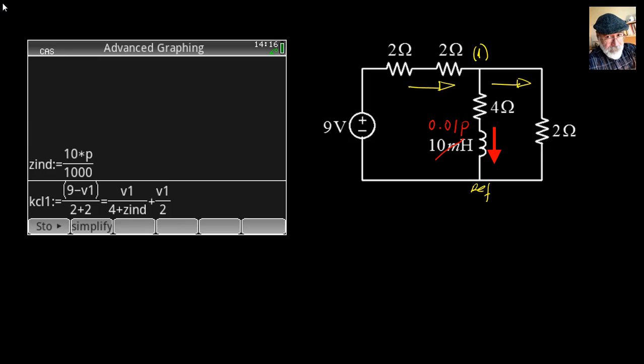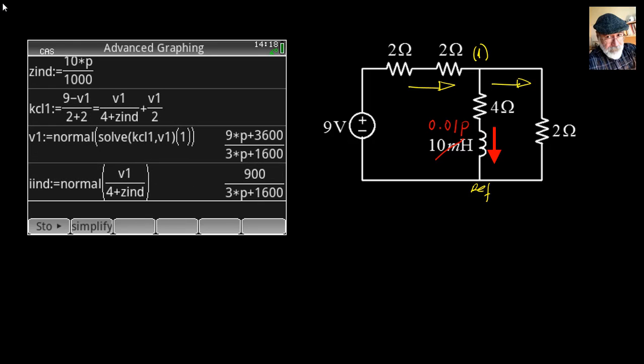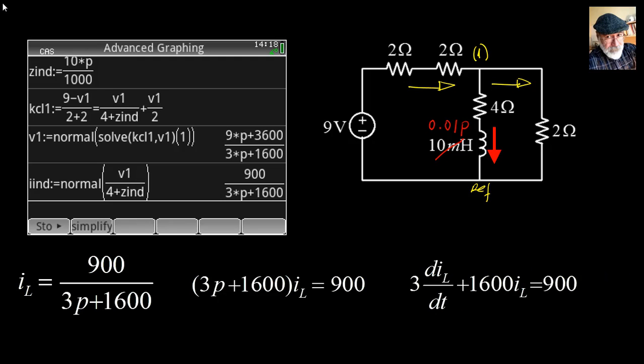Write the KCL equation: currents coming in from the left: (9 − V1)/4; currents leaving the node: V1 divided by the impedance of the middle branch (4 in series with Z_L), plus V1/2. Solve for V1. Since we need the current in the inductor, divide V1 by the impedance of the middle branch. Simplify and normalize to get the differential equation for IL.